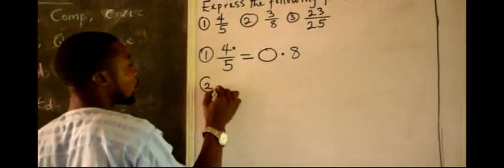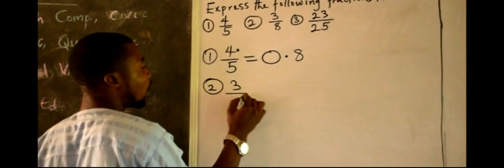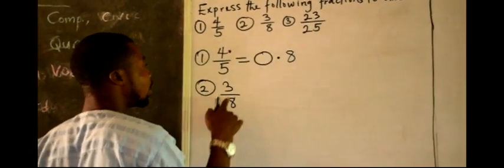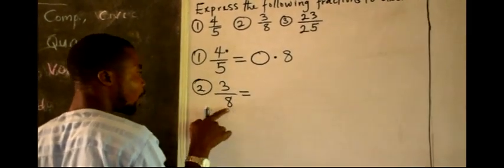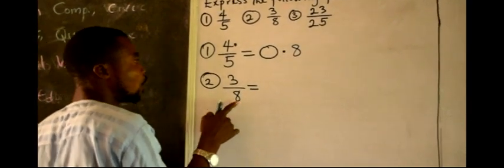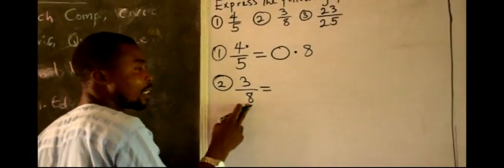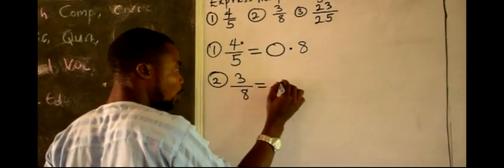Number 2. 3 over 8. I want to look at 3 over 8. We want to convert this fraction into decimal. 8 will go in 3. It cannot go.